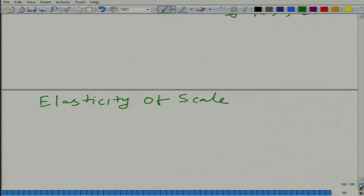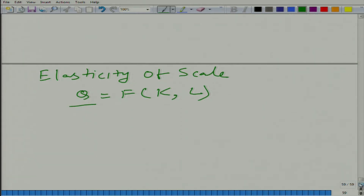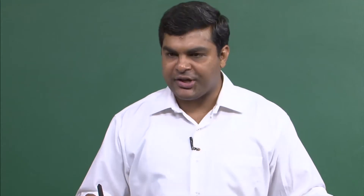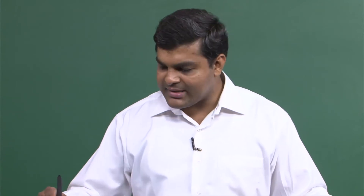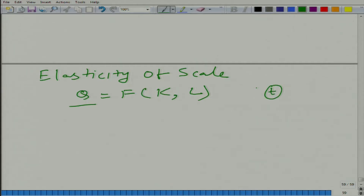Let us look at what is happening. We start with q — the output — which is a function of capital and labor. We said we will scale up the operation. We introduce a scalar variable t, where t is greater than 1 for scaling up.